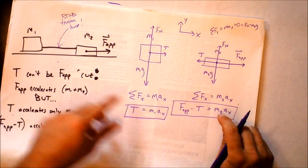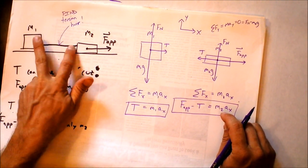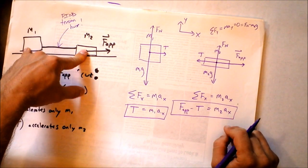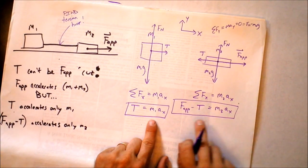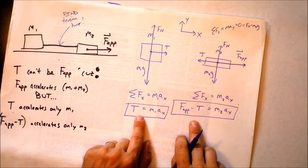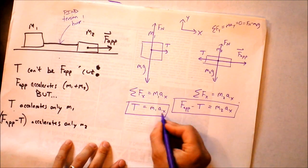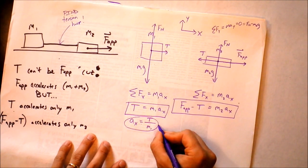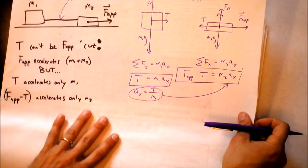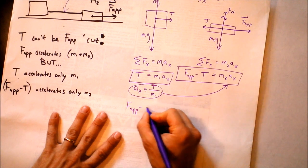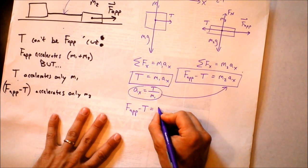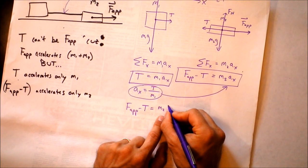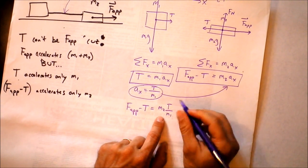The acceleration is the same for both boxes because the rope will not be stretching. If I pull box 2, box 2 and box 1 will both accelerate at exactly the same rate. So we're trying to find the tension. We can solve the first equation for a_x: a_x = T / M1. We'll take that and plug it into the second equation, giving us: F_applied minus T = M2 times T divided by M1.